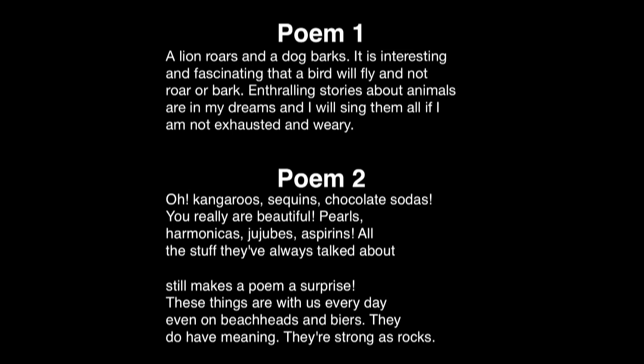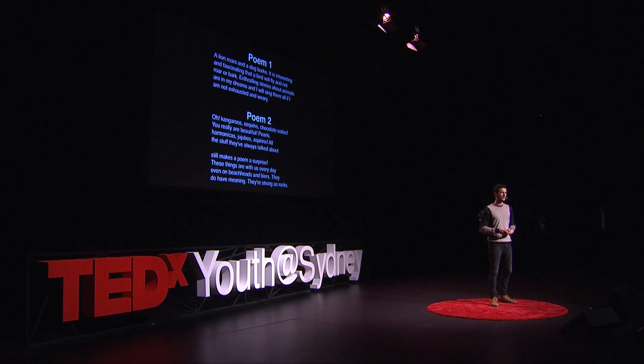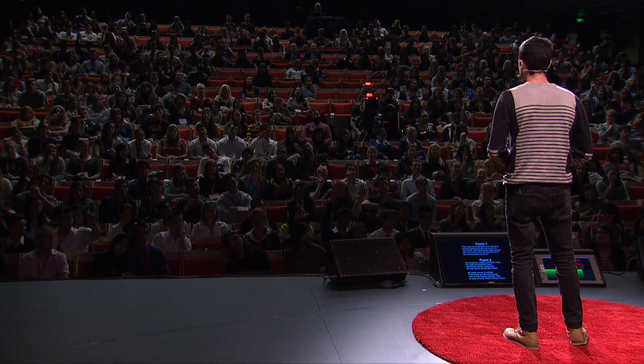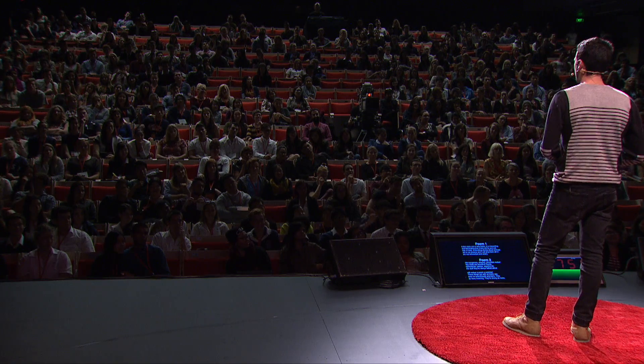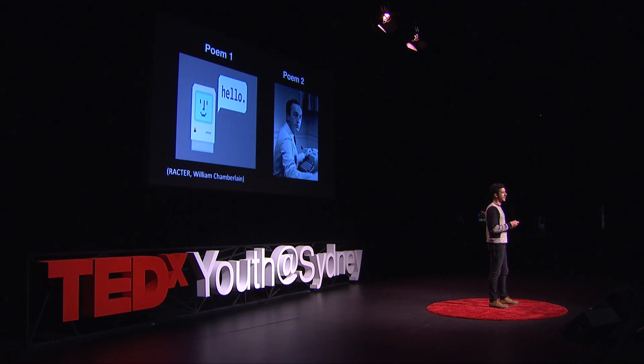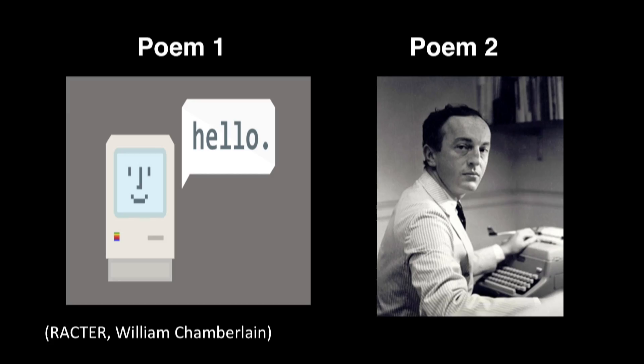So let's try another test. Again, you haven't got ages to read this, so just trust your gut. So if you think the first poem was written by a human, put your hand up. And if you think the second poem was written by a human, put your hand up. We have more or less a 50-50 split here. It was much harder. The answer is, the first poem was generated by an algorithm called Ractor, created back in the 1970s, and the second poem was written by a guy called Frank O'Hara, who happens to be one of my favorite human poets.